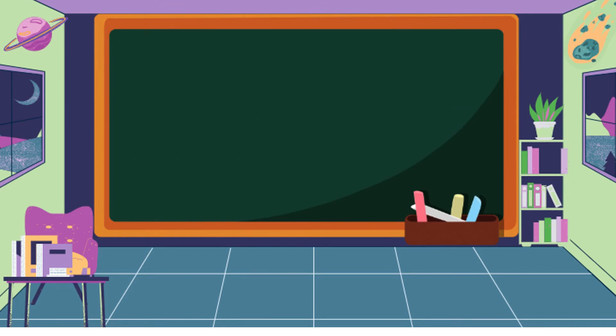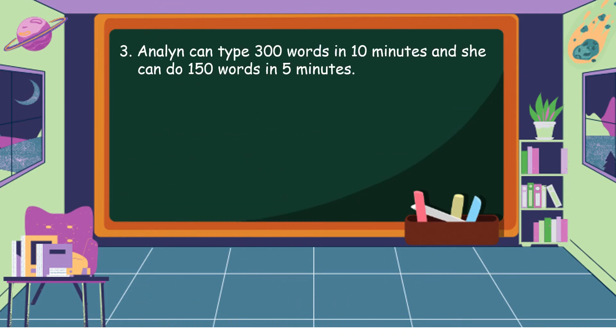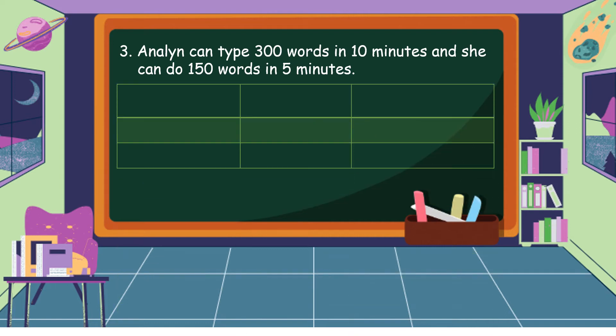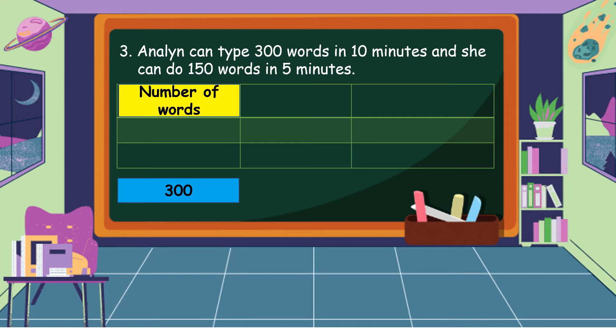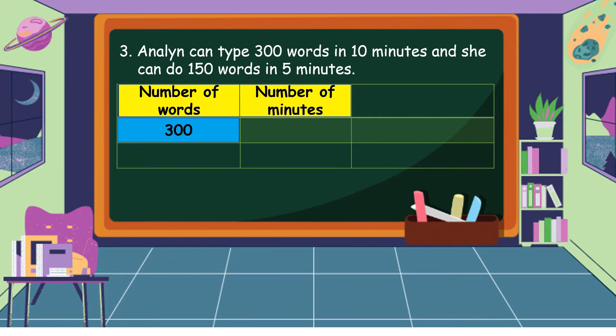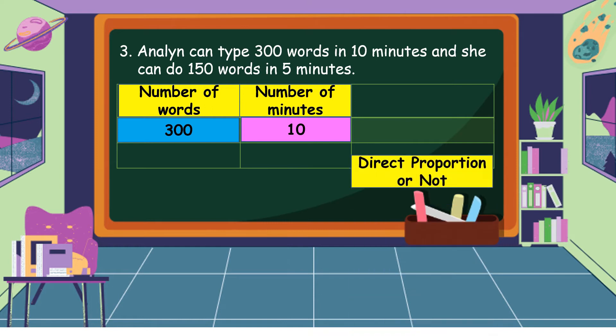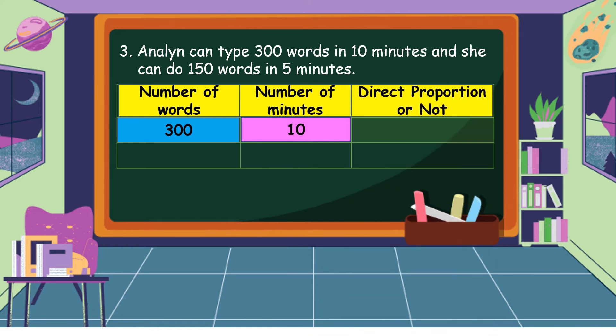Our third situation: Annalyn can type 300 words in 10 minutes, and she can do 150 words in 5 minutes. Let's analyze our situation. For the first statement, the number of words is 300 and the number of minutes is 10, so we can make our first ratio: 300 is to 10.